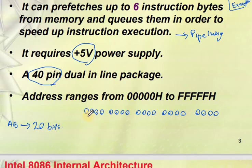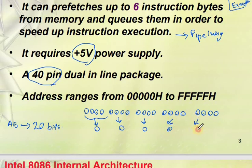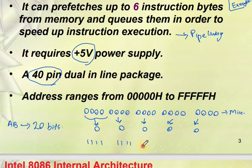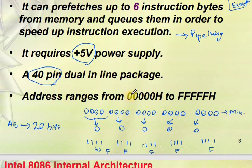In hexadecimal representation, the minimum address is 00000h — five zeros. The maximum address is FFFFFh — five F's. So the address range of the 8086 goes from 00000h to FFFFFh.